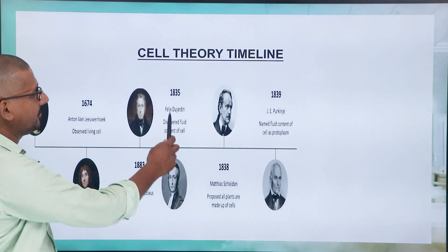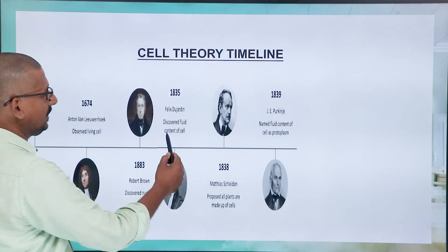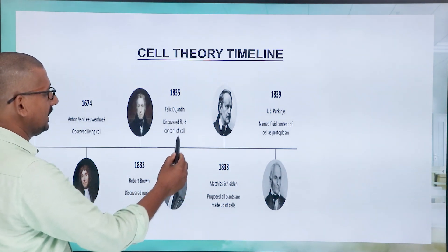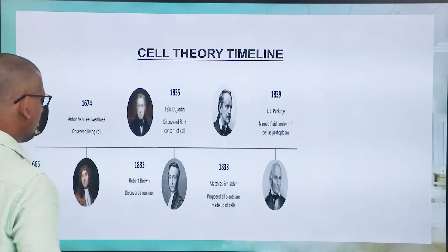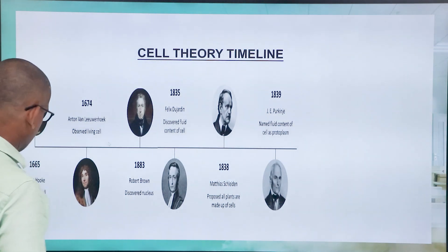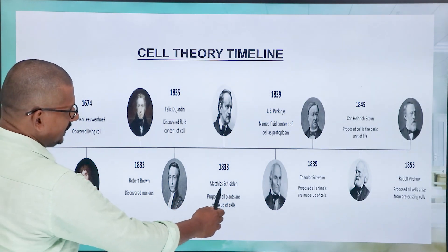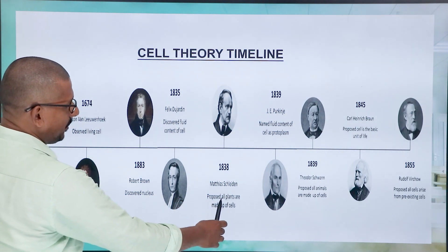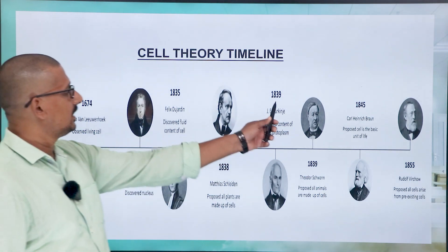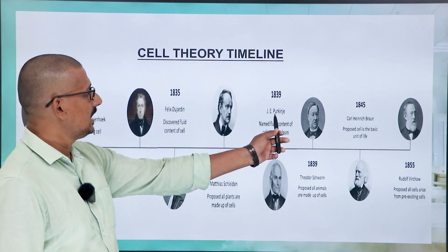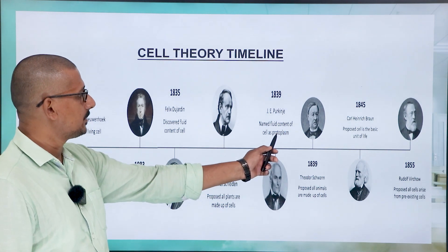Followed by 1835, Felix Dujardin discovered the contents of the cell. Then in 1838, Matthias Schleiden proposed that all plants are made up of cells. And in 1839, J.E. Purkinje named the fluid content of the cell as protoplasm.